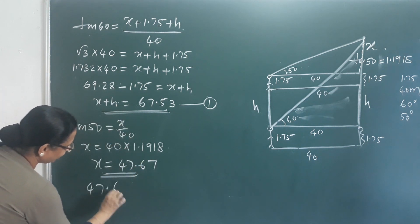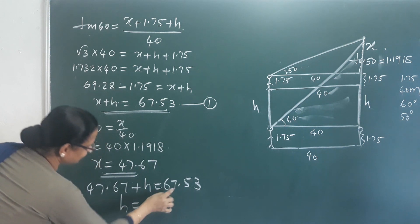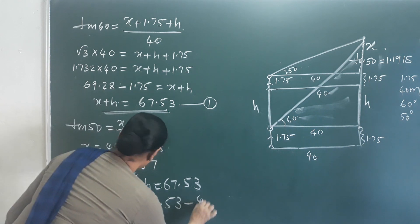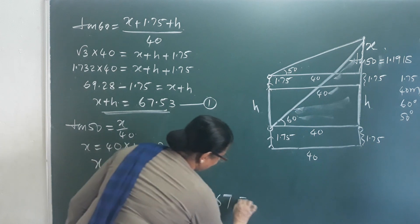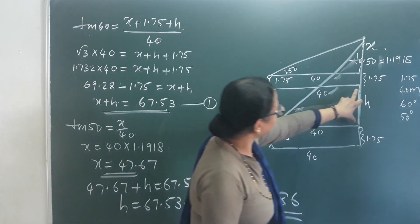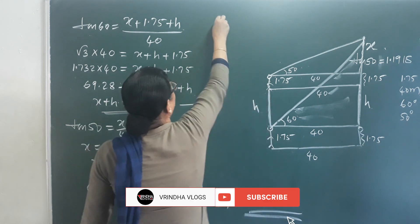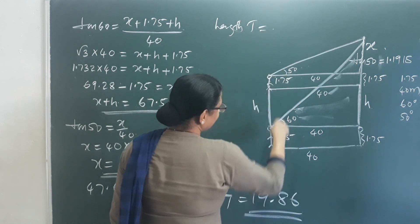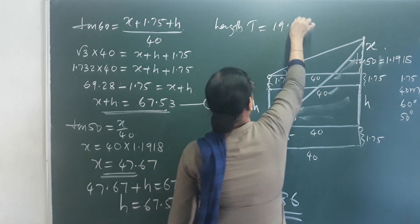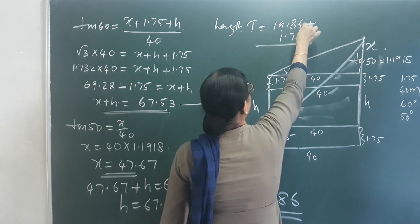So 47.67 plus H equals 67.53, therefore H equals 67.53 minus 47.67, which is 19.86. So H equals 19.86. The height of the tower is 19.86 plus 1.75, which equals 21.61.